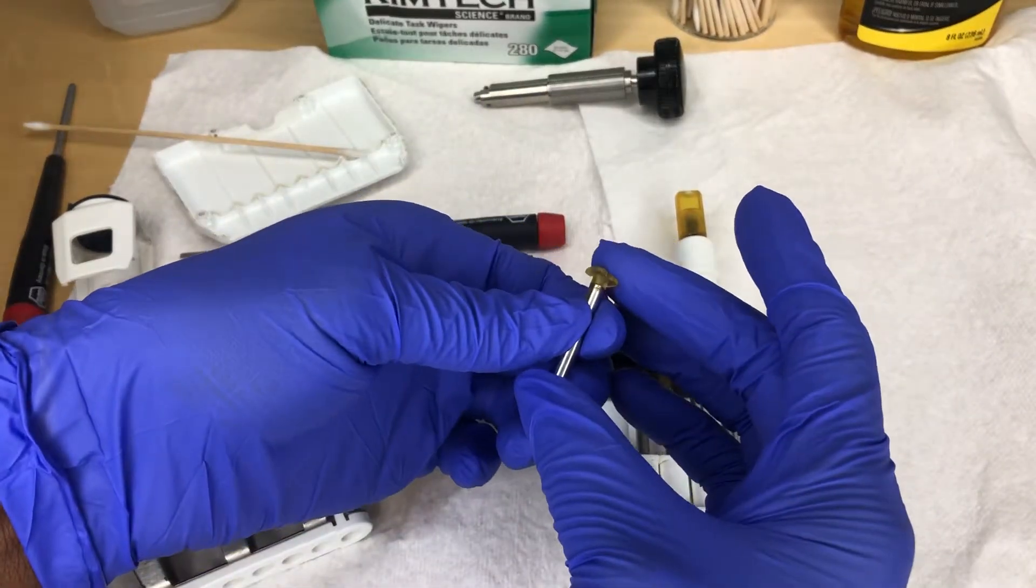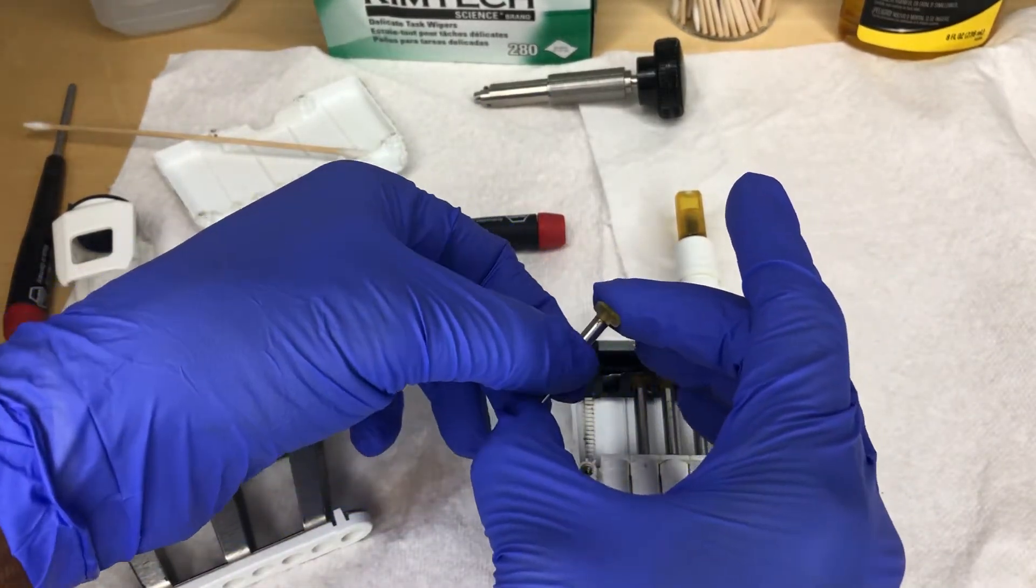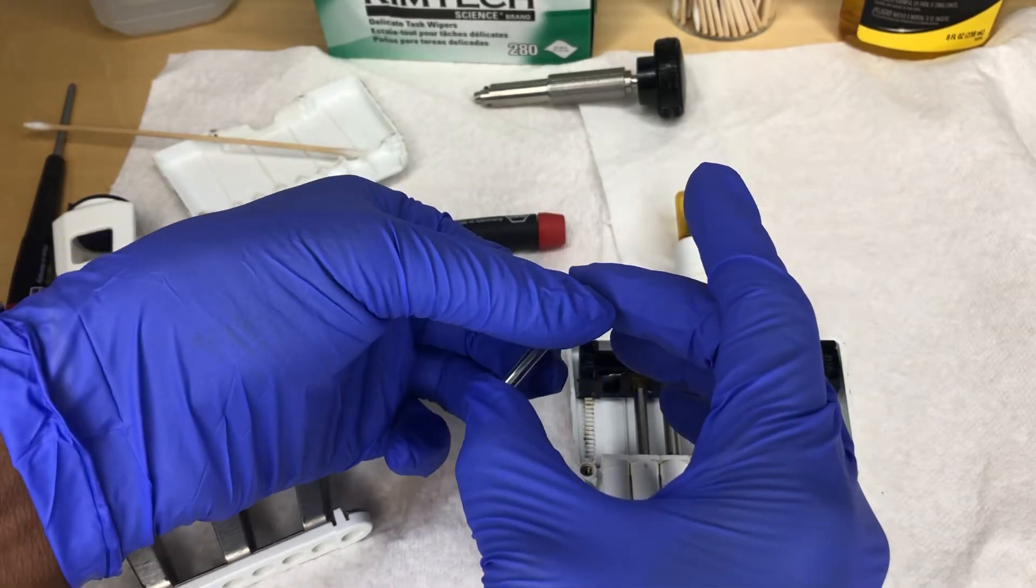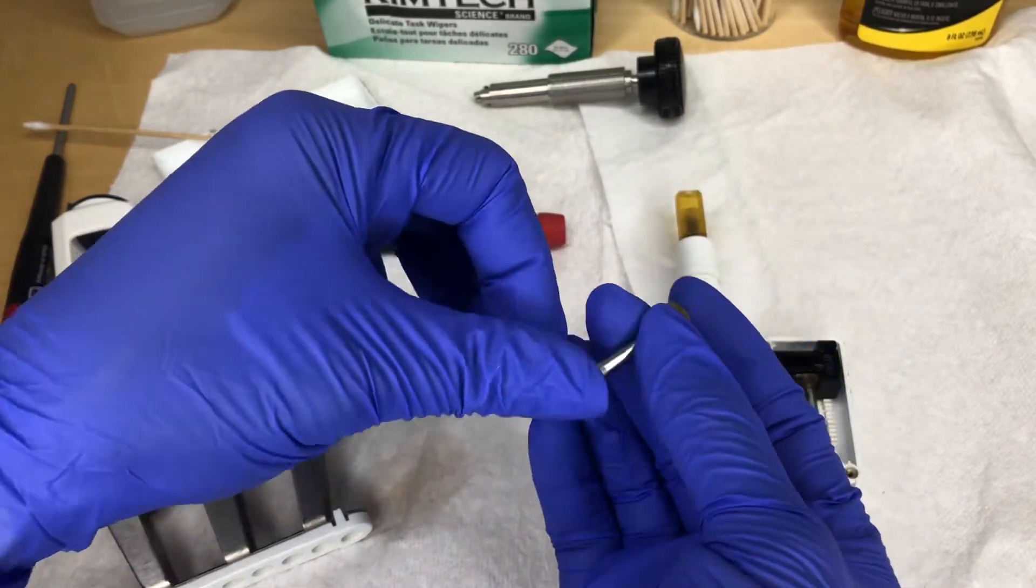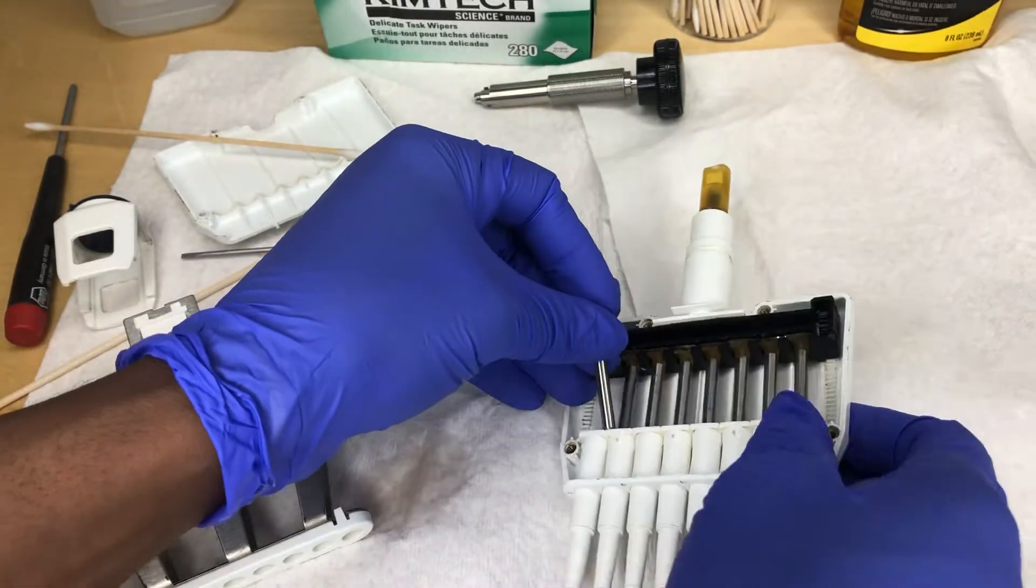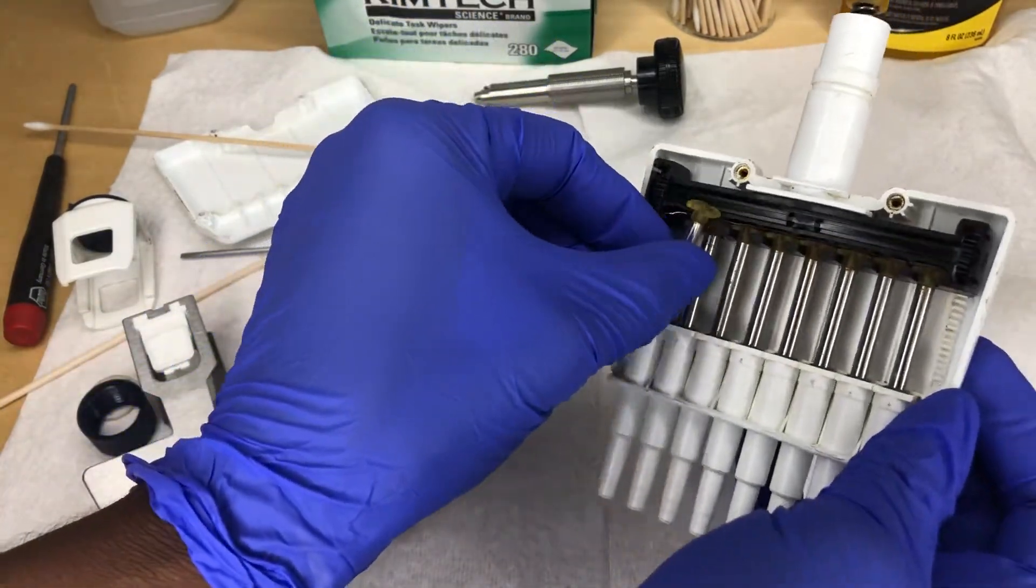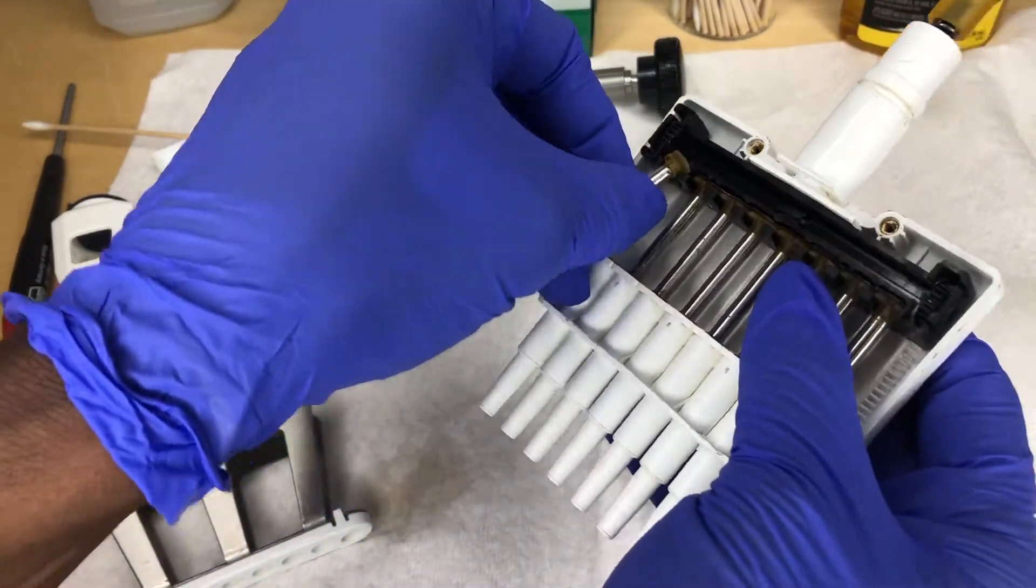Now you want to inspect your piston. If there are any pits on it, you want to grab your polish and make it shine. You will insert it back where you got it from.